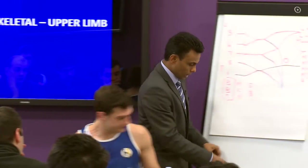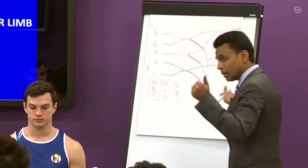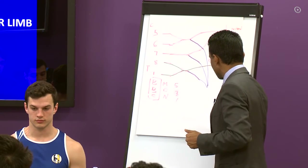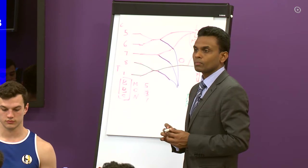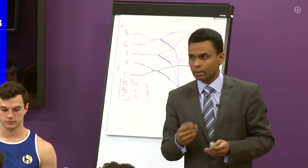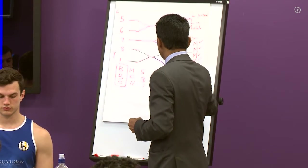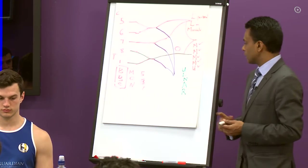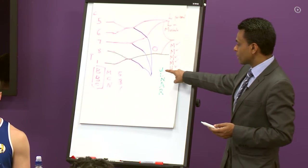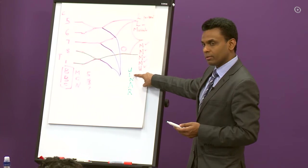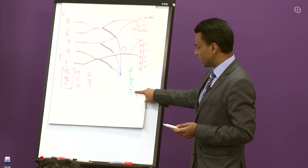What are the nerves from the posterior cord? Radial. Axillary. Upper and lower subscapular. And one more — the nerve to latissimus dorsi, also called the thoracodorsal nerve. So the mnemonic is ULNAR: Upper subscapular, Lower subscapular, Nerve to latissimus dorsi — also called the thoracodorsal nerve — Axillary, and Radial.